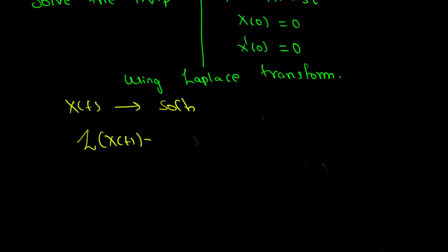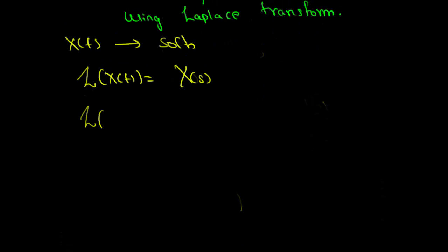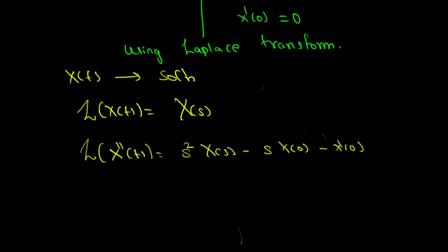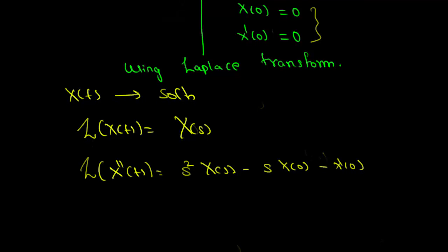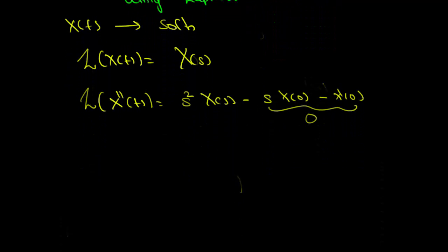The Laplace transform of x of t is capital X of s. We have the Laplace transform of x double prime of t is s squared times X of s minus s times x of 0 minus x prime of 0. But we are given these two conditions: x at 0 is 0 and x prime at 0 is 0, so this term is 0. Therefore, the Laplace transform of x double prime is s squared times X of s, and the Laplace transform of t is 1 over s squared.